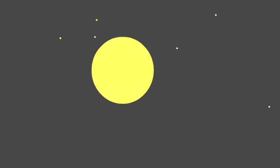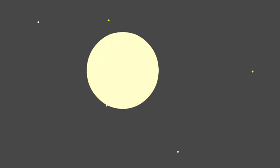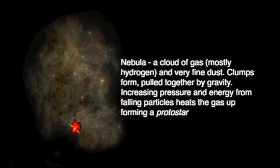If enough gas and dust falls in and the protostar contains enough matter, the central temperature will reach 15 million degrees centigrade. That's hot enough for nuclear reactions to start. In these, hydrogen fuses together to form helium.